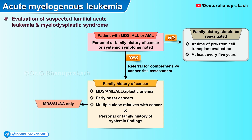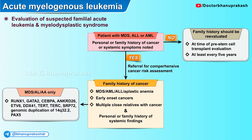Patients with MDS, acute leukemia, or aplastic anemia should be evaluated for defects in the following genes: RUNX1, GATA2, CEBPA, ANKRD26, ETV6, DDX41, TERT, TERC, SRP72, as well as genomic duplication of the long arm of chromosome 14 and PAX5 gene defect.